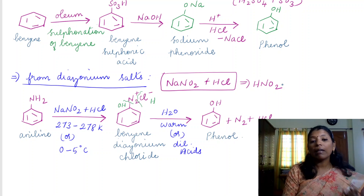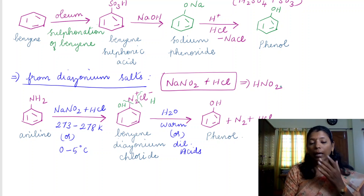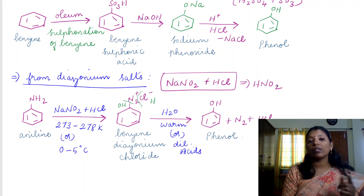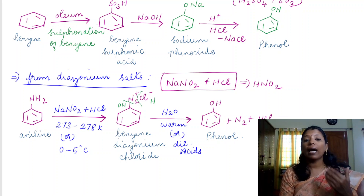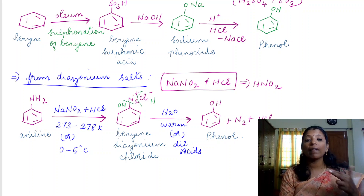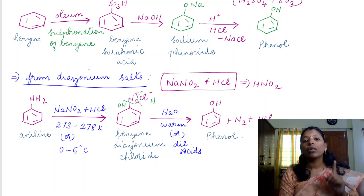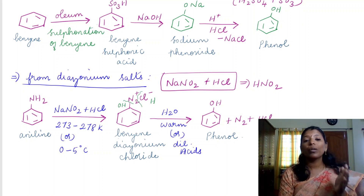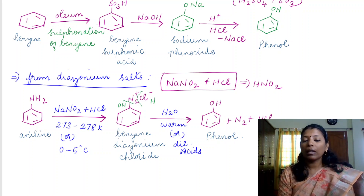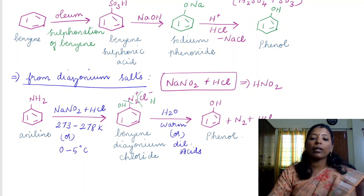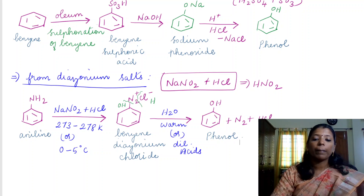So these are two more methods by which we can prepare phenol. In the previous video we saw preparation of phenol from haloarenes by Dow's process, and in this video we covered preparation from benzene sulfonic acid and from diazonium salt. There is still one more preparation — from cumene — which we will see in the next video. Hope you liked this video. Please like, share, comment, and subscribe the channel for more videos. Take care and thank you.